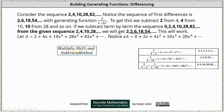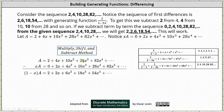So now we'll use the method of multiply, shift, and subtract to determine the generating function for the given sequence. We first let A equal the generating series for the given function. This gives us A equals two plus four x plus ten x squared plus 28 x cubed, and so on. Now we multiply both sides of this equation by x. When multiplying both sides of the equation by x, notice this gives us the sequence zero, two, four, ten, 28, 82 — the sequence we want to subtract from the given sequence to get the sequence that resembles the sequence of first differences.